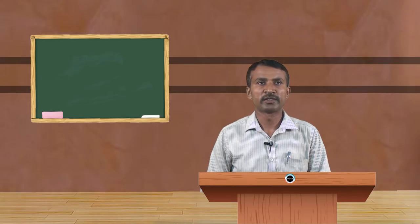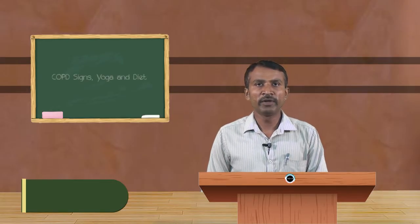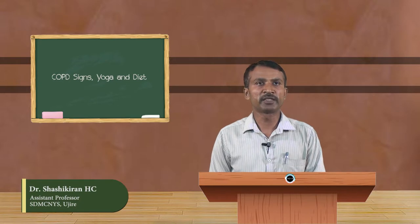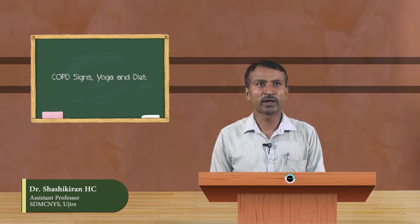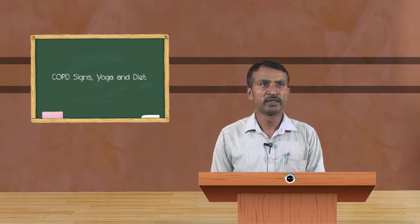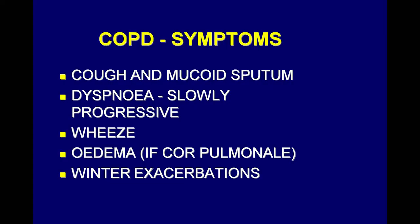Hello students. Now we know about the symptoms — the main symptoms of chronic obstructive pulmonary disease. They are cough, mucoid sputum, and dyspnea slowly and progressively. Dyspnea means breathlessness.